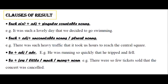Clauses of result: we can use 'such' or 'so' as a clause of result. You can use 'such' plus adjective and a noun. For example: 'It was such a lovely day that we decided to go out.' Or: 'There was such heavy traffic that it took us hours to reach the central square.' Note that in that second sentence we didn't use 'a' because 'traffic' is an uncountable noun.